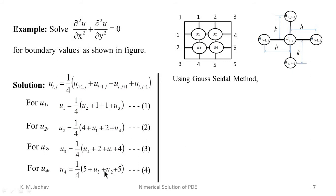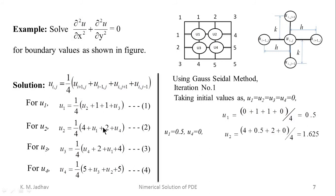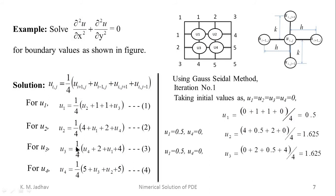In Gauss-Seidel, for the first iteration we take initial values as 0. To calculate u1, we use equation 1 with u2 = 0 and u3 = 0, giving u1 = 0.5. To calculate u2, we use equation 2 with the latest value of u1 = 0.5 and u4 = 0, giving u2 = 1.625.